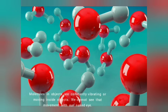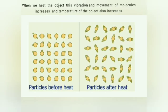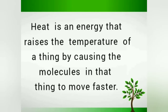Molecules in objects are constantly vibrating or moving inside objects. We cannot see that movement with the naked eye. When we heat an object, this vibration and movement of molecules increases and the temperature of the object also increases. Heat is an energy that raises the temperature of a thing by causing the molecules in that thing to move faster.